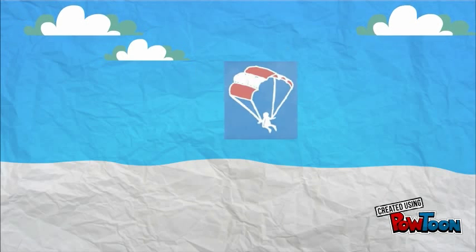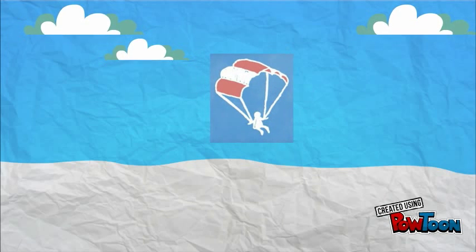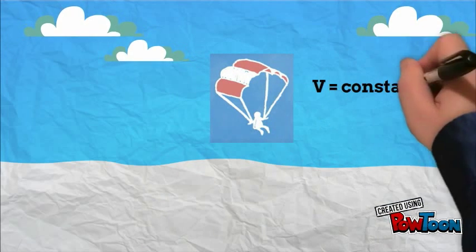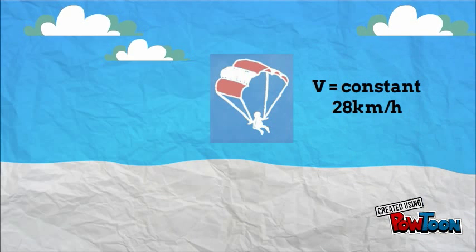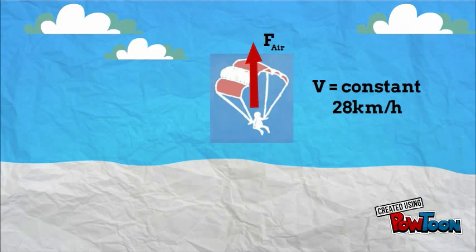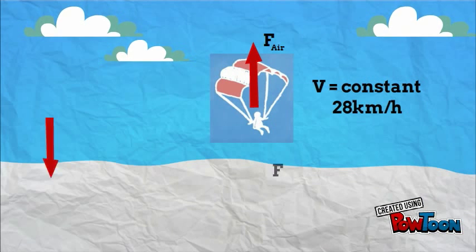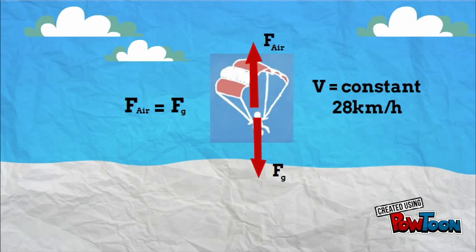As a result, the person is now approaching the ground at a constant speed of 28 km per hour, ready for a safe landing. The force of air resistance is again equal to the force of gravity after the parachute has been deployed.